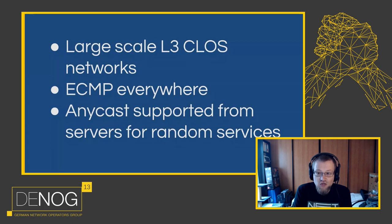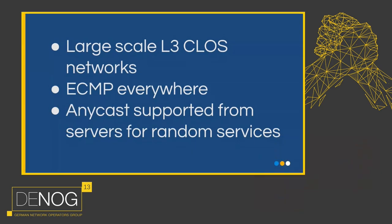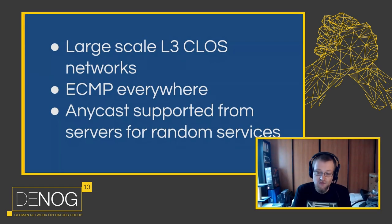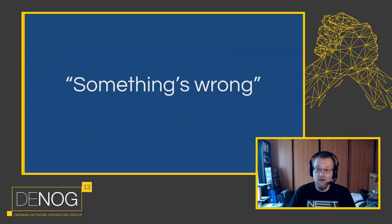So, the problem: booking.com, like probably others at this conference, runs a lot of our infrastructure on large-scale layer three ECMP networks. That means lots of switches, lots of links between them, ECMP basically everywhere. We support anycast coming from the servers — ranges are allocated for anycast and any host can advertise host routes from these ranges to the network. On the network side, we don't particularly know or care which server announces which anycast prefix. As usual, things go wrong and it can be very difficult to figure out what exactly is going wrong because there are so many devices involved and so many paths a packet can take.